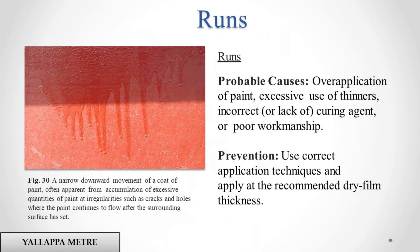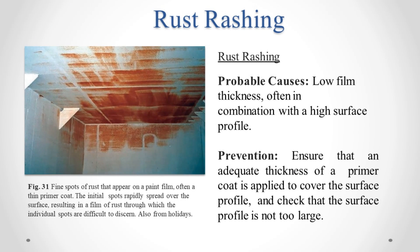Runs. Probable causes: over-application of paint, excessive use of thinners, incorrect or lack of curing agent, or poor workmanship. Prevention: use correct application techniques and apply at the recommended dry film thickness. Rust Rashing. Probable causes: low film thickness, often in combination with a high surface profile. Prevention: ensure that an adequate thickness of a primer coat is applied to cover the surface profile, and check that the surface profile is not too large.